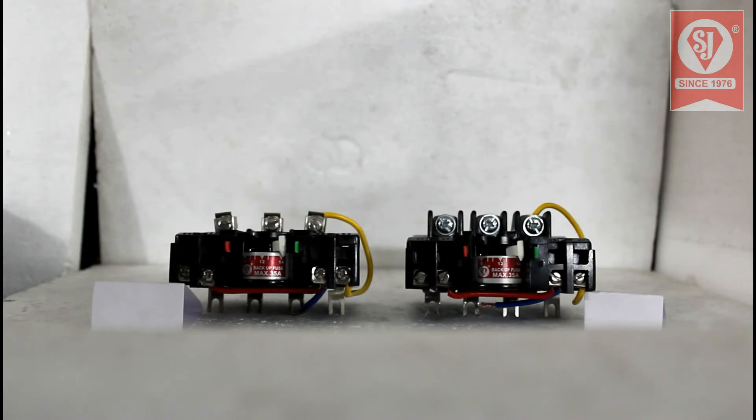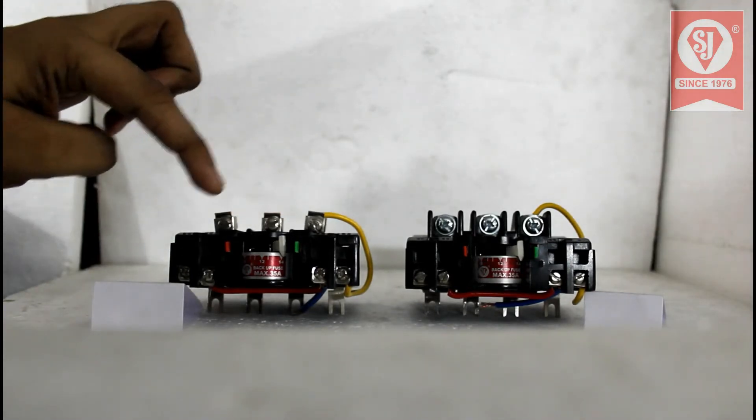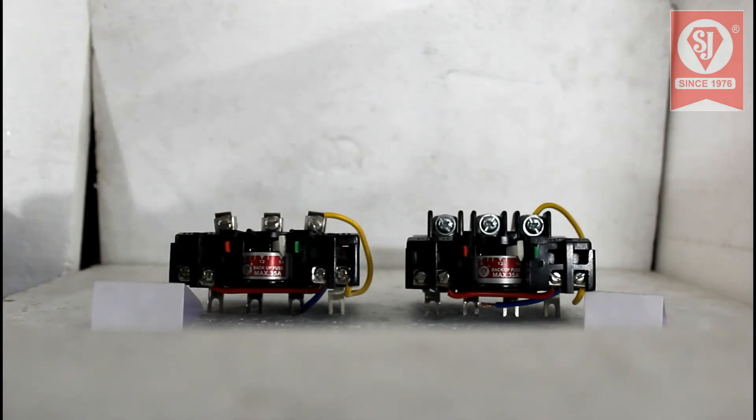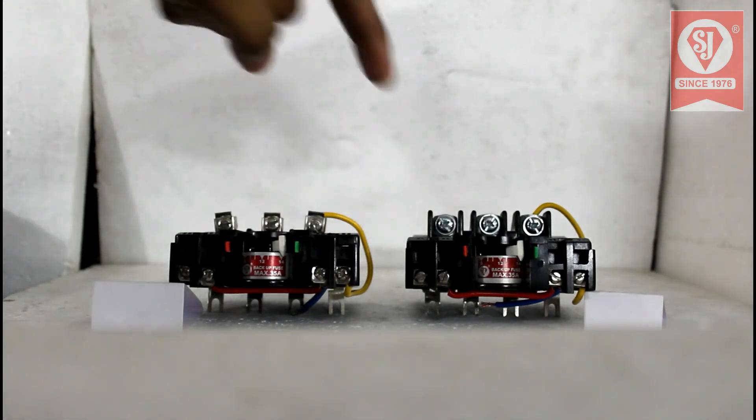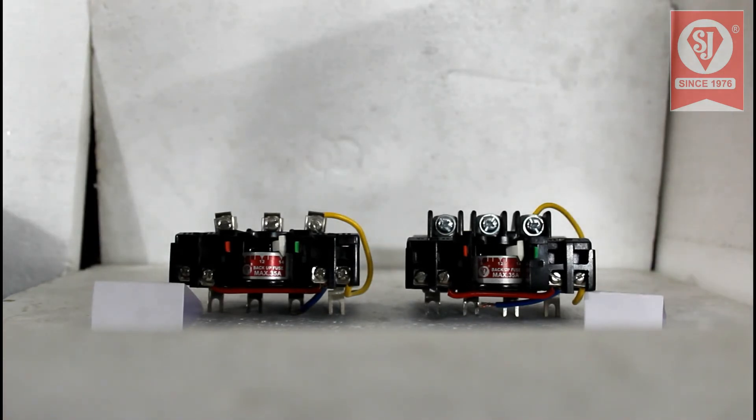Coming to bakelite body, breakdown strength of this bakelite body in MJ1 plus relay has been doubled when compared to MJ1 relay. The incoming terminal screw of MJ1 plus relay has a zinc blue coating to avoid rusting.